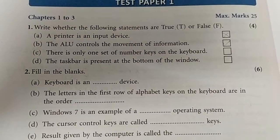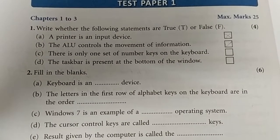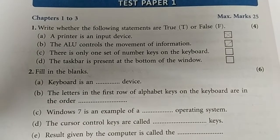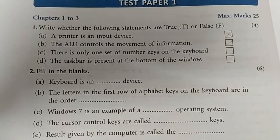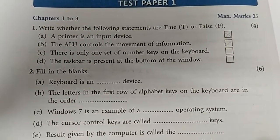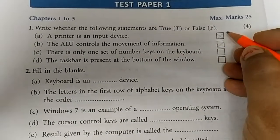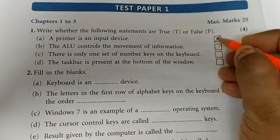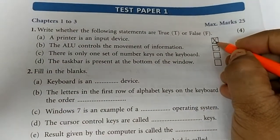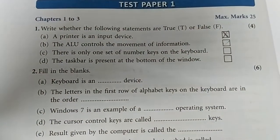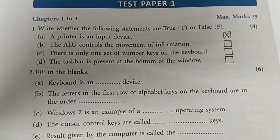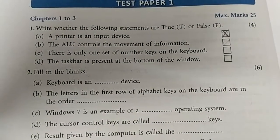1A: A printer is an input device. Right or wrong? Wrong — because a printer is an output device, not an input device. 1B.